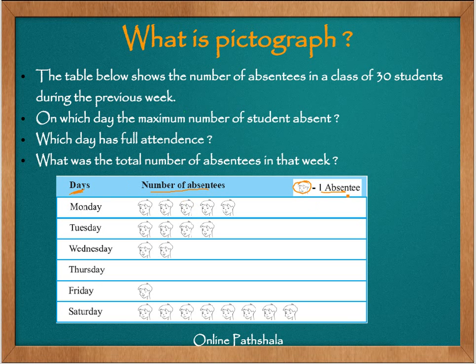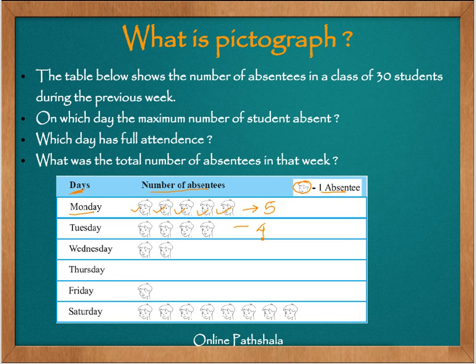To get the information from this table, let's say the day is Monday. If I count the pictures — 1, 2, 3, 4, 5 — there were 5 absentees on Monday. For Tuesday, counting 1, 2, 3, 4, there were 4 absentees. So basically it's showing how many absentees were in class on each particular day of the week.